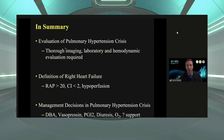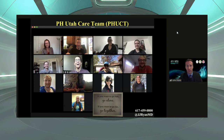In summary: evaluating pulmonary hypertension crisis requires thorough imaging, laboratory, and hemodynamic evaluation. Our definition of right heart failure is elevated right atrial pressure, low cardiac index, and hypoperfusion. Management decisions include dobutamine, vasopressin, PGI2, diuresis, and oxygen, and potentially mechanical support. As Dr. Jones says, it takes a team approach — our motto is: if you want to go fast, go alone; if you want to go far, go together. Thank you.